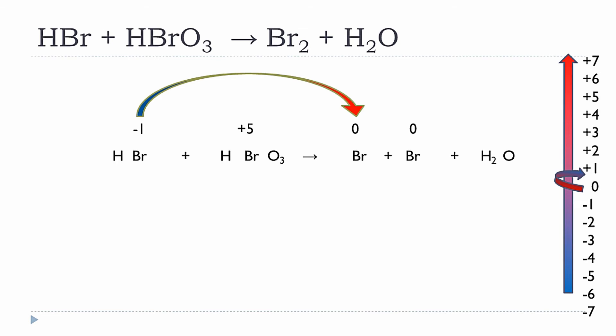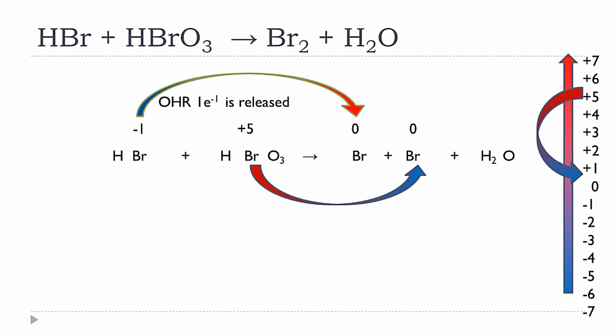Going from minus one to zero means the Br in HBr has lost an electron — the process is oxidation. The oxidation half-reaction releases one electron, so Br in HBr is being oxidized. For Br in HBrO3, the oxidation number changes from plus five to zero — a decrease — meaning it is being reduced. The reduction half-reaction requires five electrons.